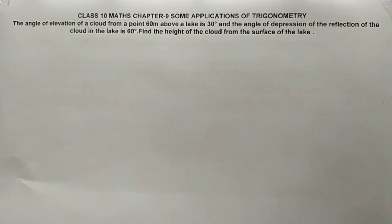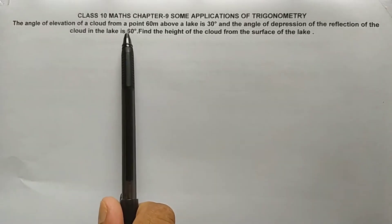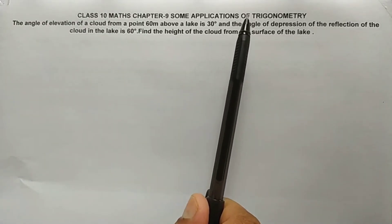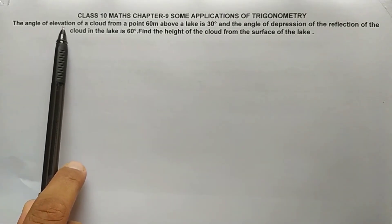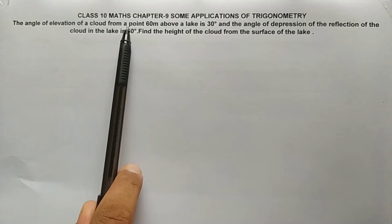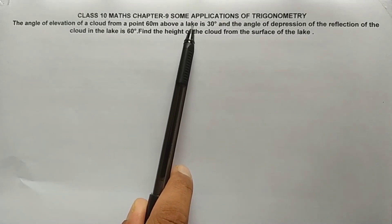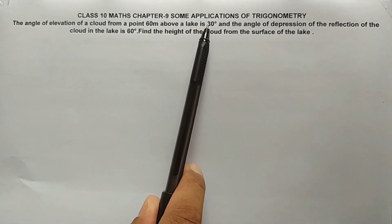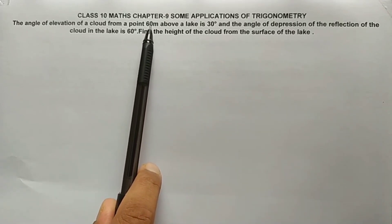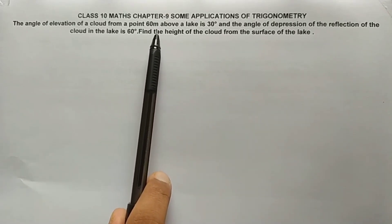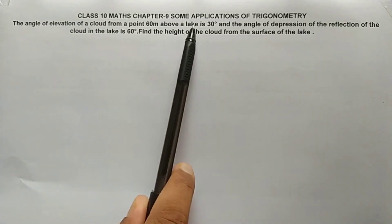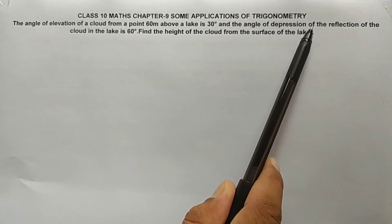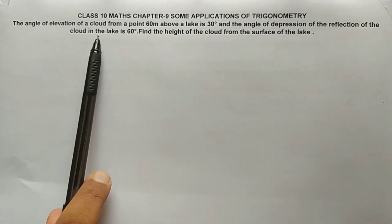Welcome students. In this math class we'll discuss one question taken from Class 10, Chapter 9: Some Applications of Trigonometry. The question is: the angle of elevation of a cloud from a point 60 meters above a lake is 30 degrees. From that point, the angle of depression of the reflection of the cloud in the lake is 60 degrees.